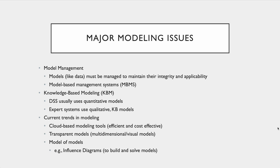An expert system is really where a brain dump of specialized knowledge happens. Some of the current trends in modeling include a focus towards cloud-based modeling — uploading data into a cloud model and having it output an answer. Cloud models sometimes have more access to data and may produce better outcomes, but that extra data can also become noise. Transparent models and multidimensional visual models produce graphs and visualizations to aid decision making. Influence diagrams help build and solve models, set up inputs, and guide the direction we may want to go.